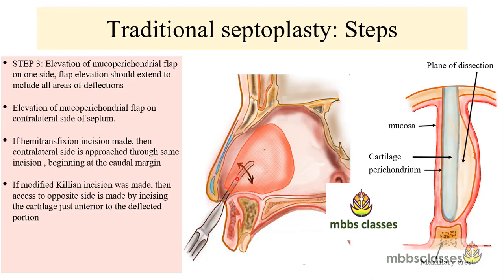The flap is elevated using the Freer's elevator. The dissection continues in the submucoperichondrial plane, and flap elevation extends to include all areas of deflection until we reach the bone and cartilage junction. After reaching the bone-cartilage junction, the cartilage is separated from the posteriorly present bone, and dissection then begins in the subperiosteal plane — that is, below the periosteum in the bony part of the septum.